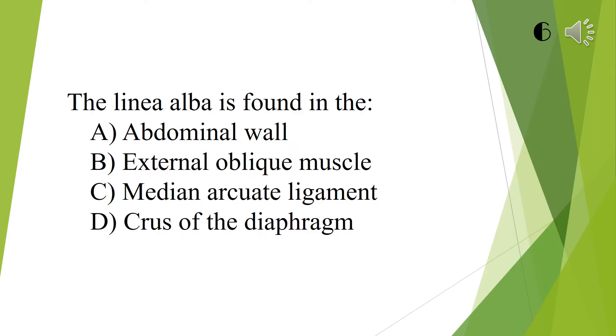The linea alba is found in the abdominal wall, external oblique muscle, median arcuate ligament, or crus of the diaphragm. The answer is abdominal wall.